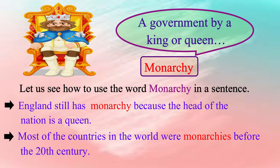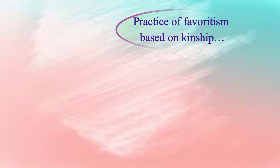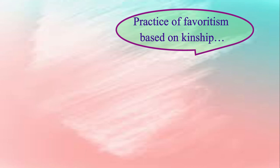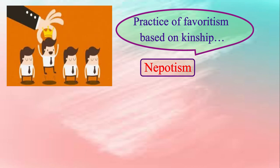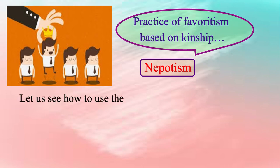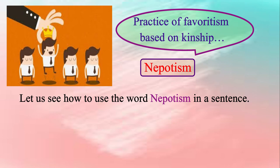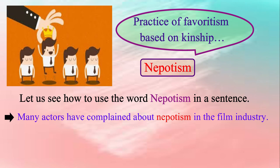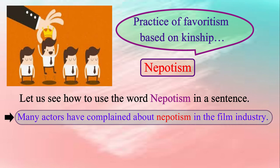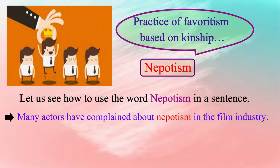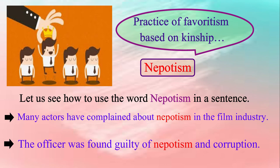Let us see the next expression. Practice of favoritism based on kinship, or we can simply say nepotism. Nepotism is the act of using your power or influence to get good jobs or unfair advantages for members of your own family. Let us see how to use the word nepotism in a sentence. Please repeat after me: Many actors have complained about nepotism in the film industry. The officer was found guilty of nepotism and corruption.